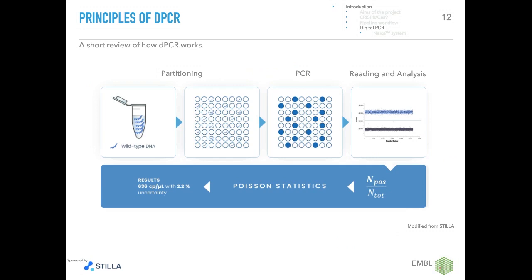We would like to introduce you to the principle of digital PCR. Compared to classic PCR, digital PCR splits the reaction into several thousands of partitions, and the template DNA is randomly distributed into these partitions. Each partition is an individual reaction scored after thermocycling for either the presence or absence of PCR product. If the target is present, it gets amplified and the fluorescent signal is detected, resulting in a positive partition. If absent, no fluorescent signal is detected and the partition is scored as negative. The ratio of positive versus total partitions is then converted into copies per microliter using Poisson statistics.